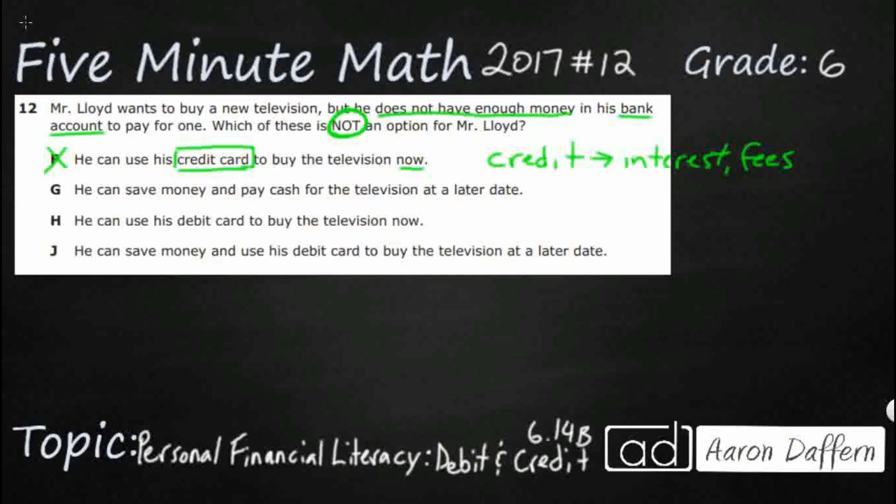He can save money and pay cash for the television at a later date. So here is our payment method. He's going to pay cash at a later date. Probably the best option.